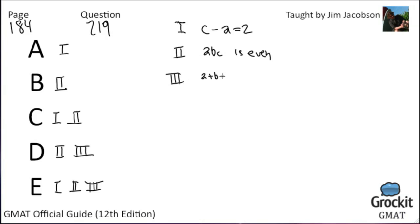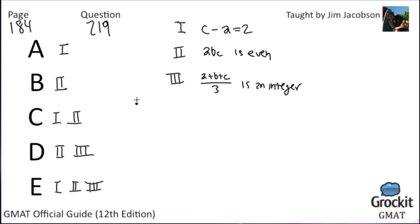Statement 1: C − A = 2. Statement 2: ABC is even. Statement 3: (A + B + C)/3 is an integer. Strategy for Roman numeral questions: start with whatever is easiest or appears most often in the answer choices to eliminate options quickly. Statements 1 and 2 each appear three times; statement 3 appears twice.